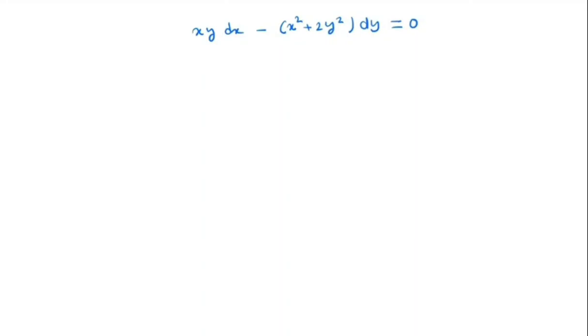Hi everyone, welcome back to my channel. Now we will talk about xy dx minus x square plus 2y square dy equal to zero. First, try to simplify this, so we have xy dx equals x square plus 2y square dy. So dy by dx will be xy divided by x square plus 2y square.